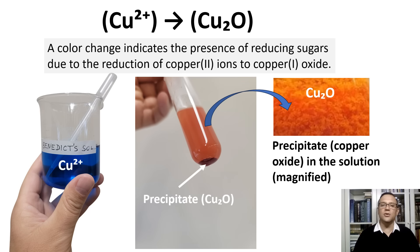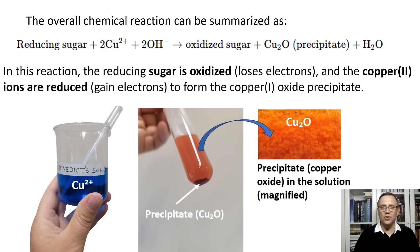Students often ask: what does 'to precipitate' mean? To precipitate means to cause a solid to form and separate out from a solution. Here is the overall chemical reaction of the Benedict's test. In this reaction, the reducing sugar is oxidized — meaning it loses electrons — and the copper ions are reduced — meaning they gain electrons — to form the copper oxide precipitate.